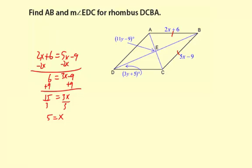Now we can use that x value to find the measure of AB, which is represented by 2x plus 6. So substitute 5. AB equals 2 times 5, which is 10, and then plus 6. So AB equals 10 plus 6, which is 16.